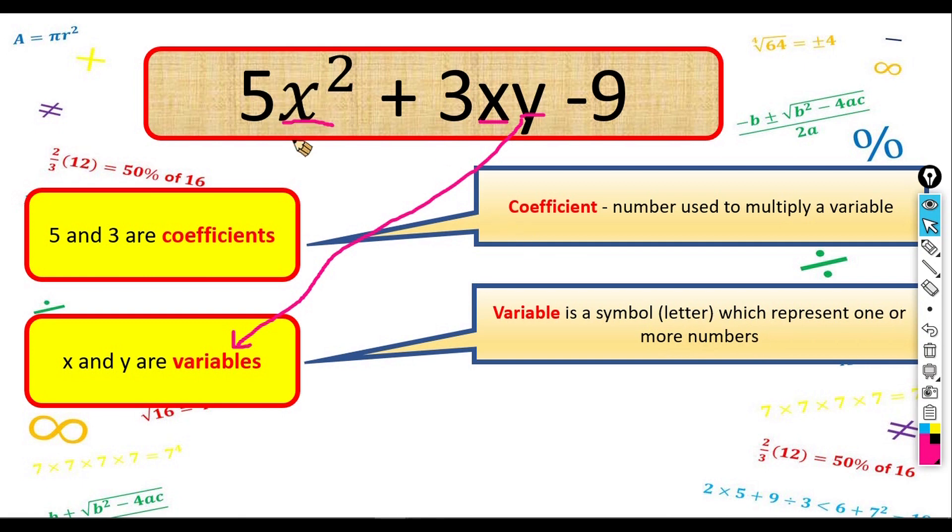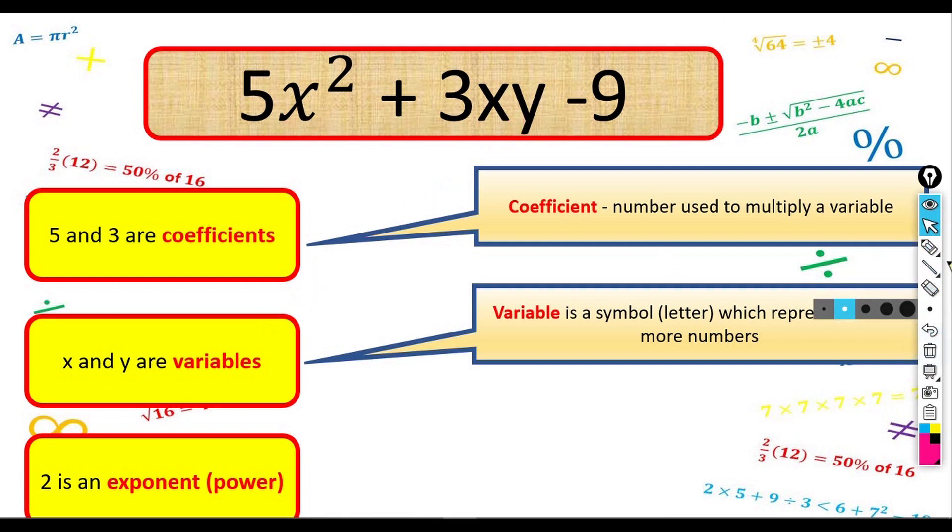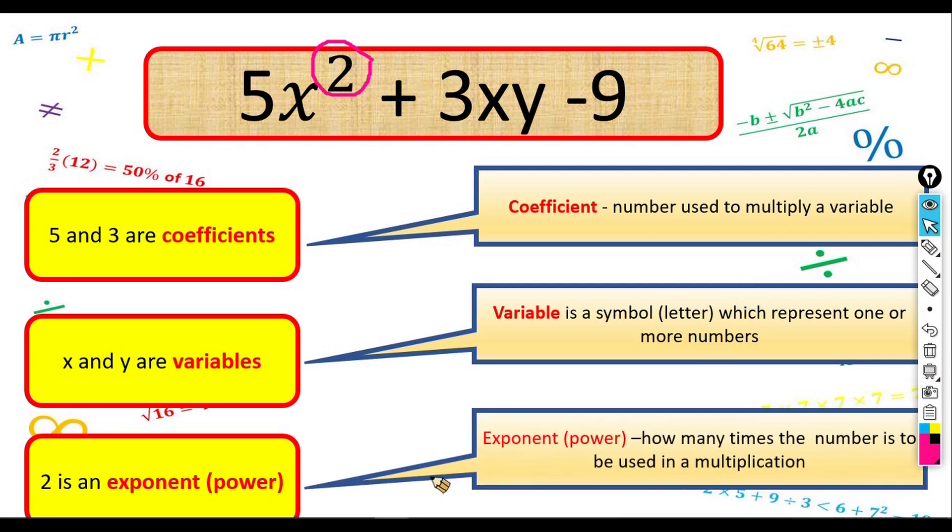So we have two variables here, X and Y. What is the two here? The two here is an exponent or we call it power. What is exponent or power? It is how many times the number is to be used in a multiplication.